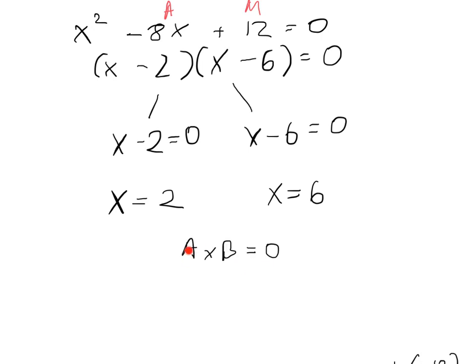So if a times b gives you 0, then we can say, for example, if a is a number, then what would you multiply a number by to get 0? It would have to be 0. It couldn't be any other number. Say, let's just imagine if a was, say, 5, what would you multiply 5 by to get 0? It would have to be 0.